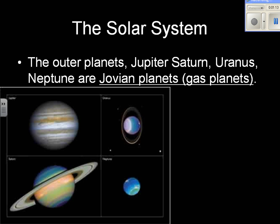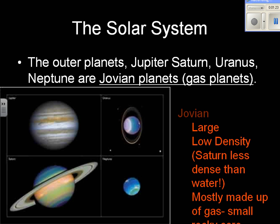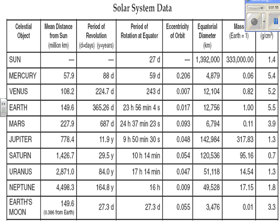Jupiter, Saturn, Uranus, and Neptune are known as Jovian planets, or the gas planets. The Jovian planets are the larger planets of the solar system and are low in density. Saturn, for example, is less dense than water. They are mostly made up of gas, which is why they are low in density, and they have a small rocky core. So they have greater mass but are low in density because they're mostly gas.